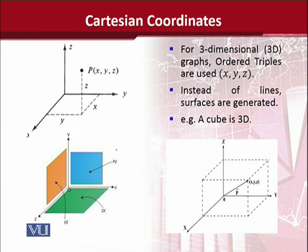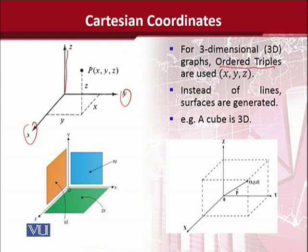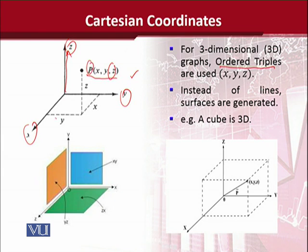Now let us consider the case of three variables. When there are three variables, we do not use ordered pairs but ordered triples, because there are three values. You will have seen the 3D concept in life — 3D glasses, television, etc. This means objects have not just width and length represented by x and y, but also height represented by a z-axis. If you look at the corner of your room, you will see that the x, y, and z axes are formed there. A point P in this system requires travelling a distance on x, a distance on y, and a distance on z to be located.